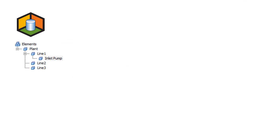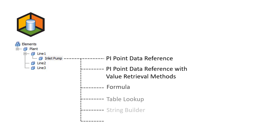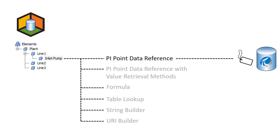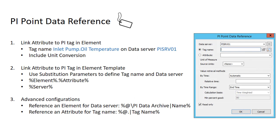Data references allow you to link various items to attributes in your AF hierarchy. One of the simplest and most common links is the PI point data reference, linking a PI tag on a data archive to an attribute of one of your elements. Let's take a look at a few different ways to do this, each with an increasing level of complexity.